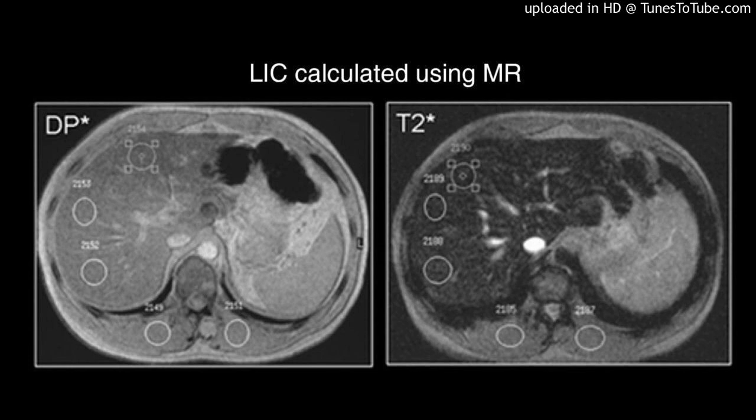We also assessed the correlation of cardiac and hepatic hemosiderosis with plasma ferritin levels. Methods: We studied 60 patients with BTM with a mean age of 17.5 ± 9.1 years from the northwest of Iran. HFE gene mutations were analyzed using the polymerase chain reaction restriction fragment length polymorphism method.